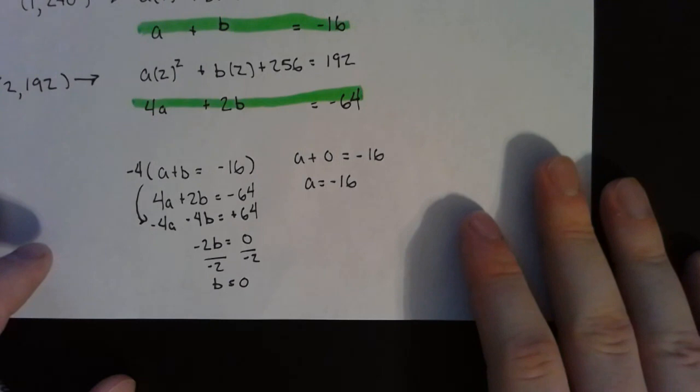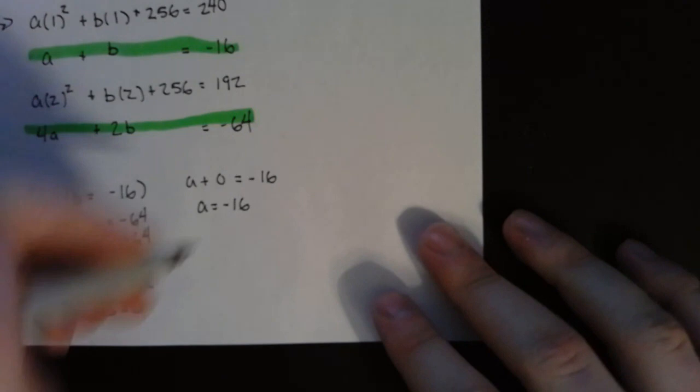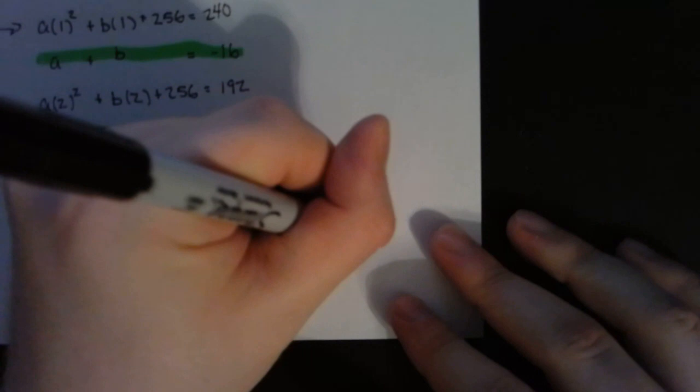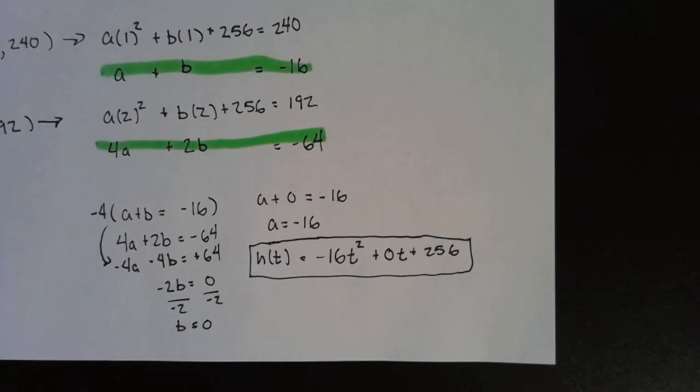Hopefully you got those same values for a and b. Now that we know what a and b are though, think back to what the original question was asking. Write an equation for the function that models this situation. So we want to write this quadratic here. So we know now that a is negative 16, that b is zero, and that c is 256. And I am writing this as a function called h of t because if you think back to the context of the original problem, we're talking about height and time, so I am using this notation to represent this function because I think it most accurately represents what it is we're talking about here.